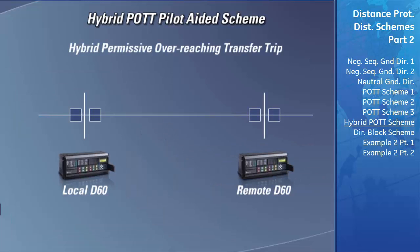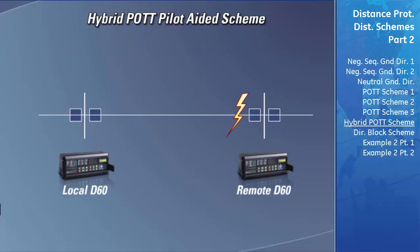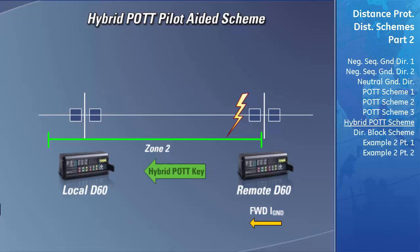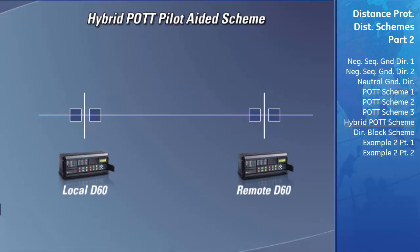The hybrid POTT, or hybrid permissive overreaching transfer trip scheme, is a modification of the POTT scheme that adds an extra degree of security and additional protection for transmission lines that have a weak in-feed source. The hybrid POTT scheme works in the same way as the POTT scheme to speed up the clearing of end zone faults. Both a zone 2 fault and forward-flowing ground current detected by the remote D60 will send a permissive key to the local D60. The hybrid POTT adds extra security by having the local D60 also monitoring for detection of reverse ground current or a zone 4 reverse fault.